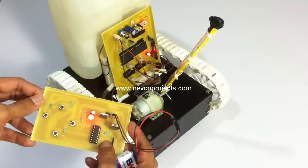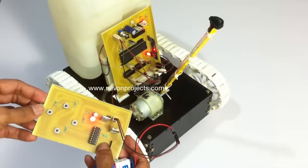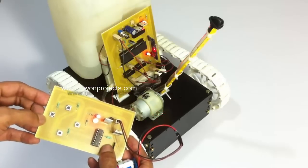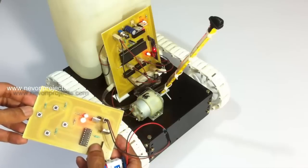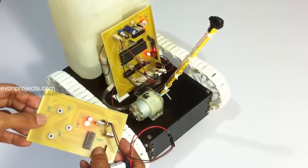Now let's see how the spray works. We can press this button here to activate the spray so that it runs the motor which is connected to the tank and sprays water in our direction.